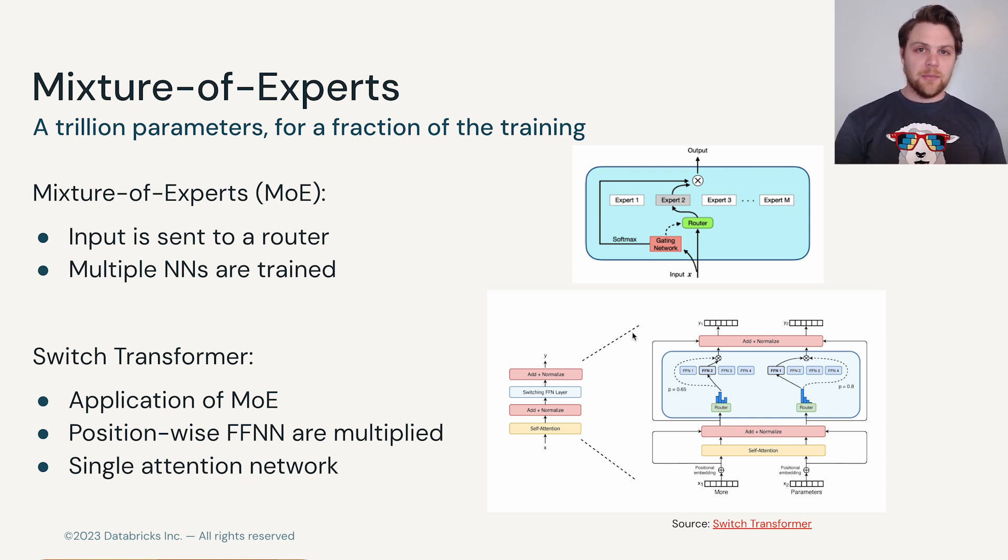The way that this helps us with our parameter cost is that we could have multiple, say 100 billion parameter feedforward networks, and train them one at a time. This would mean that during the training process, through different samples in each batch, the router would learn which expert to send the signal to.